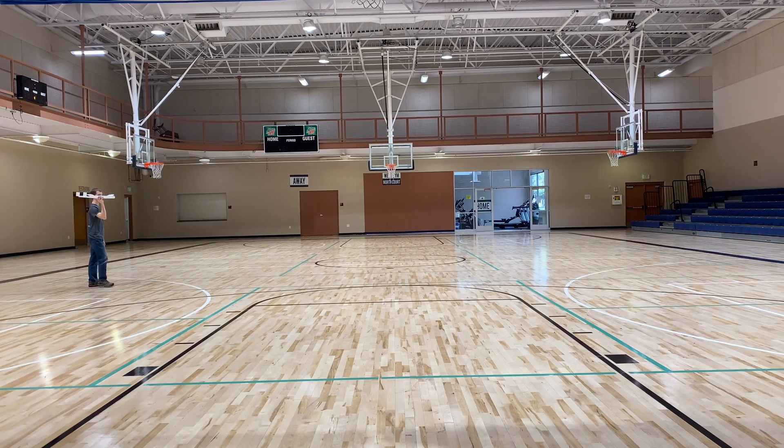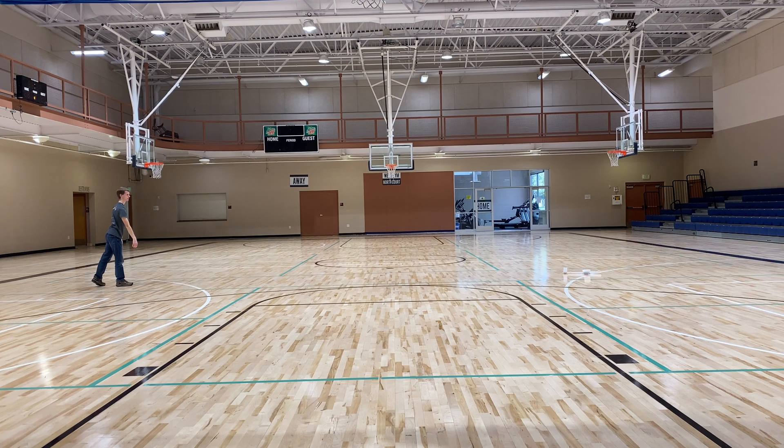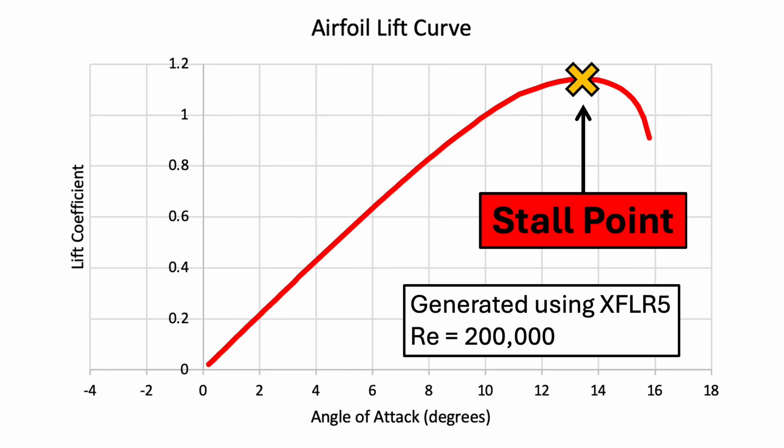This is an example of a plane that tilts upwards too much and stalls. The angle of attack at which the stall occurs, called the stall point, depends on the shape of the airfoil and the flight conditions, such as speed and air density. Usually, the stall point is somewhere between 10 and 20 degrees.